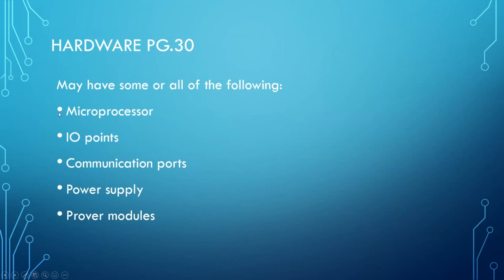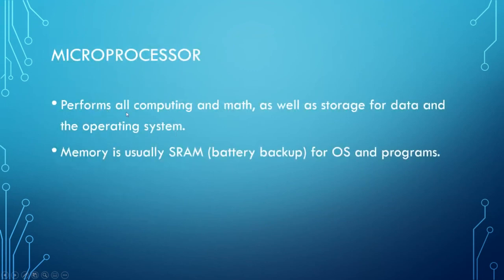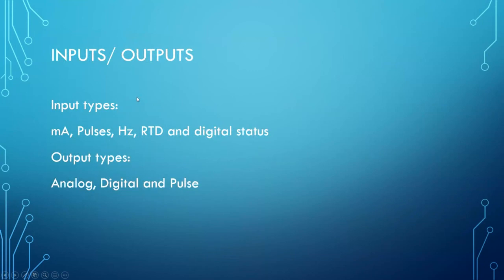Components found in flow computers include a microprocessor to perform all computing, math, and data storage with the operating system; memory (typically RAM) holding the operating system and programs; and inputs and outputs that vary by design. Typical inputs include milliamp inputs, pulse inputs from turbine meters, frequency inputs, RTD, and discrete inputs. Outputs include analog, digital, and pulse outputs — a multitude of possibilities depending on the particular flow computer style.